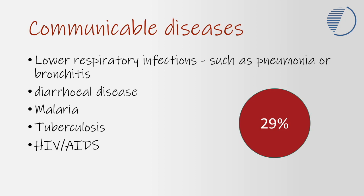Children become so rapidly dehydrated if they catch diarrheal disease like the rotavirus. Malaria is also still a major killer — around 400,000 people each year die from it. That's small relative to the number infected, but still too many.